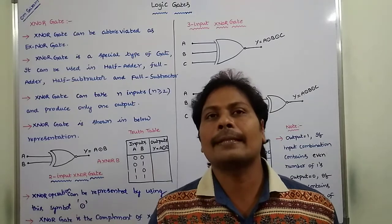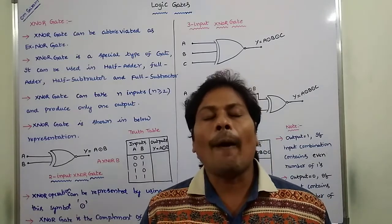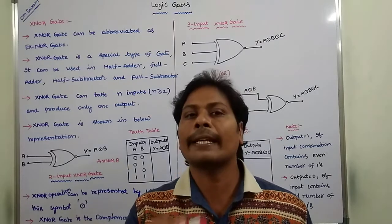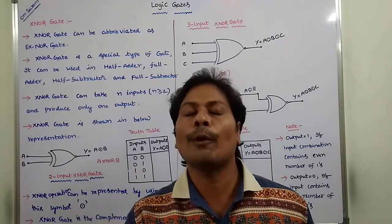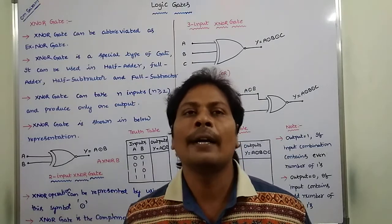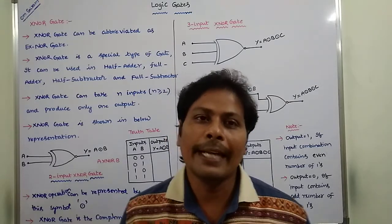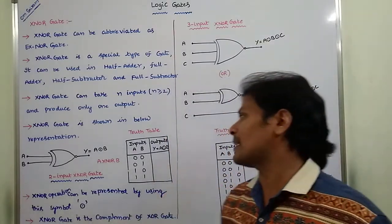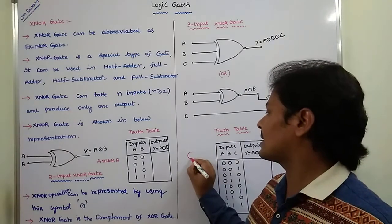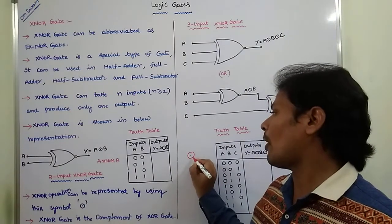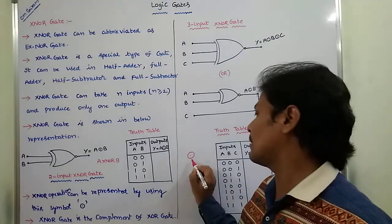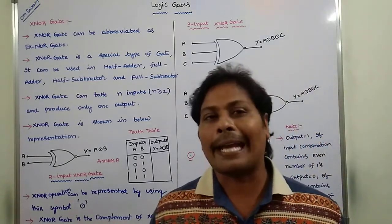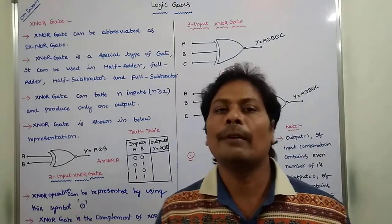XNOR gate is the negation or complement of the XOR gate. XNOR gate can be represented by using this symbol — a dot inside a circle — and this symbol is used for representing the XNOR operation.